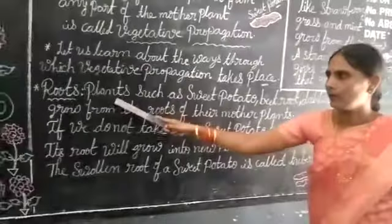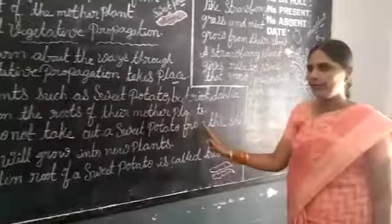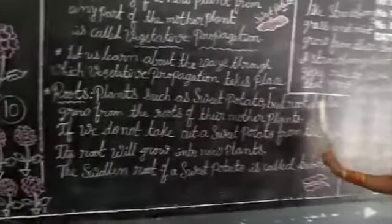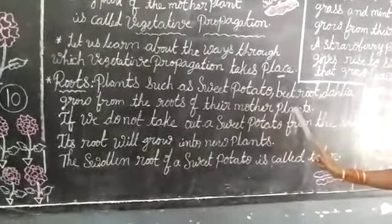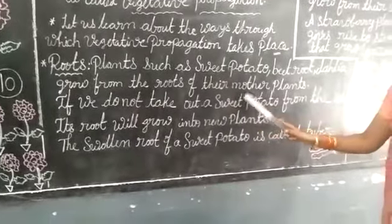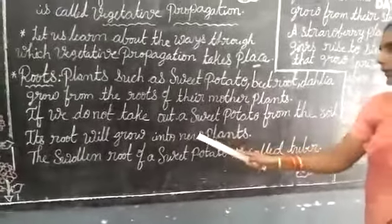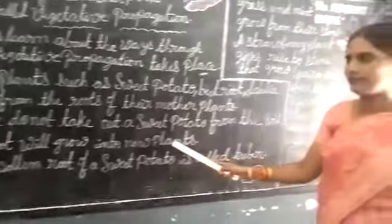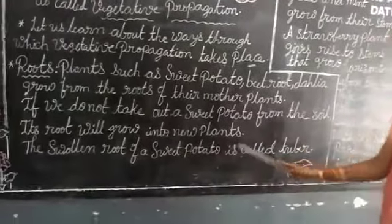Let's learn about roots. Plants such as sweet potato, beetroot, and dahlia grow from the roots of their mother plants. If you do not take out a sweet potato from the soil, its root will grow into new plants. The smaller root of a sweet potato is called a tuber.